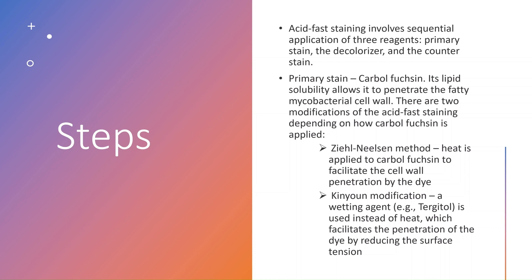There are two modifications of the acid-fast stain. Number one is the Ziehl-Neelsen modification, which is the one commonly used. Here we use heat to facilitate penetration by the dye. After adding the carbolfuchsin, you heat the slide — hot carbolfuchsin penetrates the bacterial cell wall better than at room temperature. This is necessary because the cell wall is very resistant due to its high lipid content.